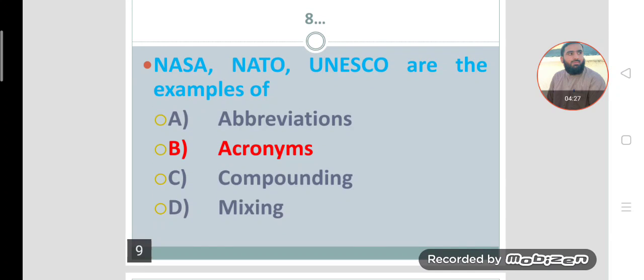Another very important MCQ. Number eight: NASA, NATO, UNESCO are the examples of acronyms. Abbreviation, dear students, abbreviation we read individual letters. For example, ATM, USB. These are abbreviations. We are reading abbreviations individually.